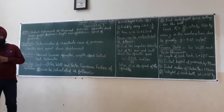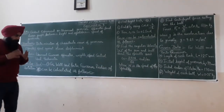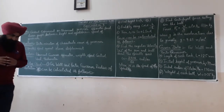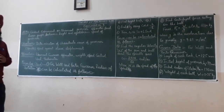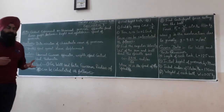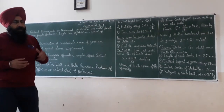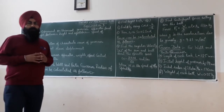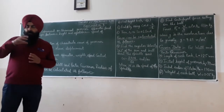The apparatus required for this experiment: first, the universal governor apparatus; second, weights; third, a speed control device; and a tachometer. The tachometer is used for measuring the RPM of the governor.